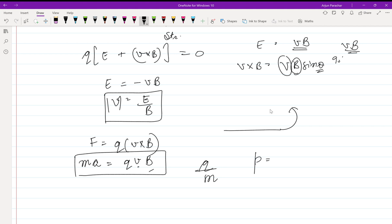For a cyclotron, momentum is qBR. So mv = qBR.